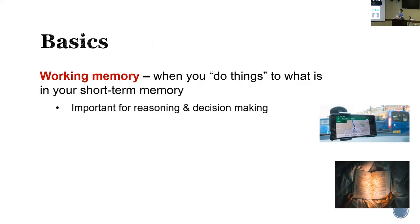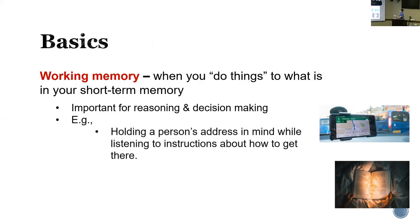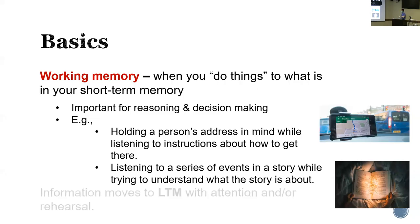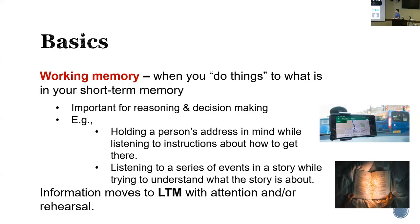Working memory is when you do things with what is in your short-term memory. There's overlapping between the two. Working memory is very important for our reasoning and decision-making. For example, working memory is like holding a person's address in mind while listening to instructions about how to get there — it's a little bit higher processing than short-term memory. Another example: listening to a series of events in a story while trying to understand what the story is about. You're using that information.